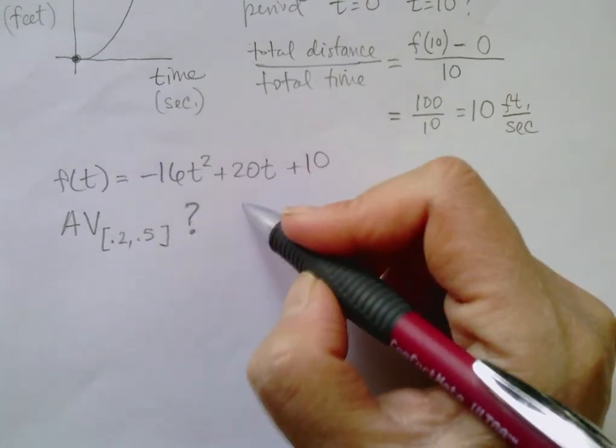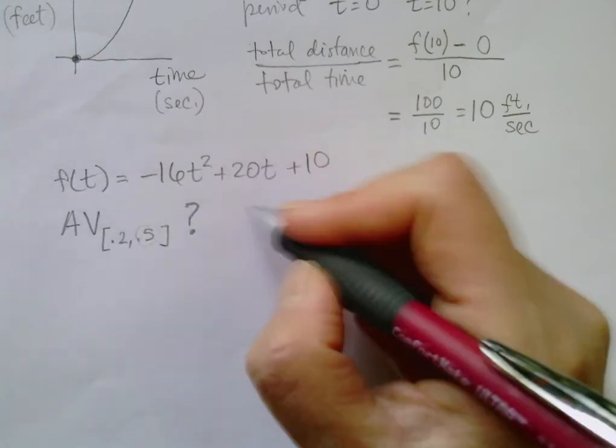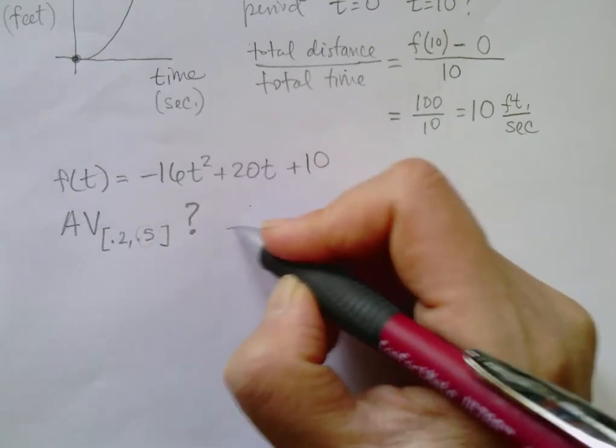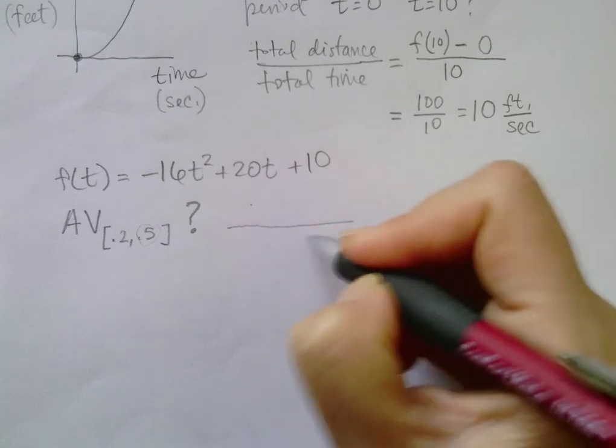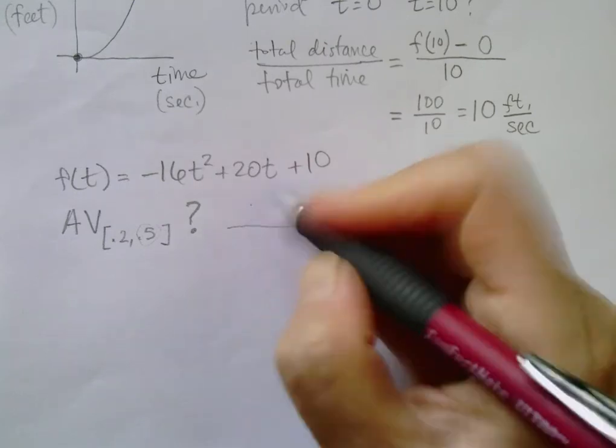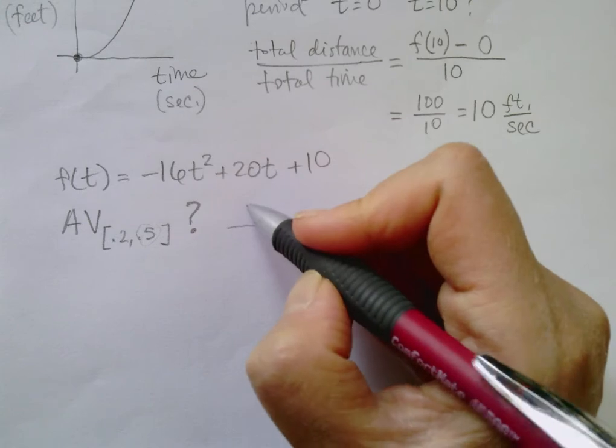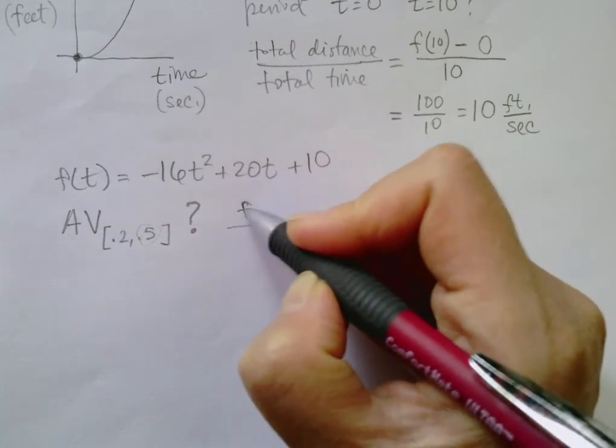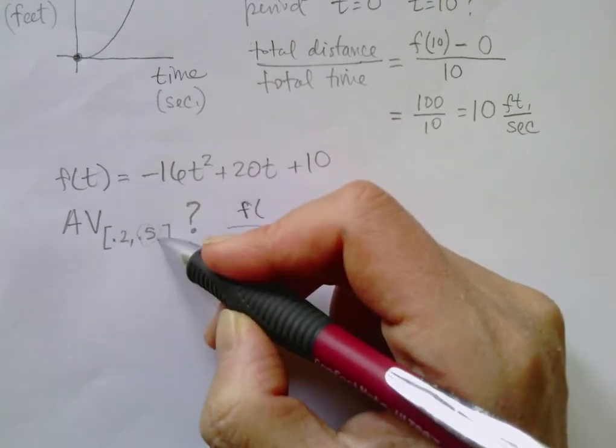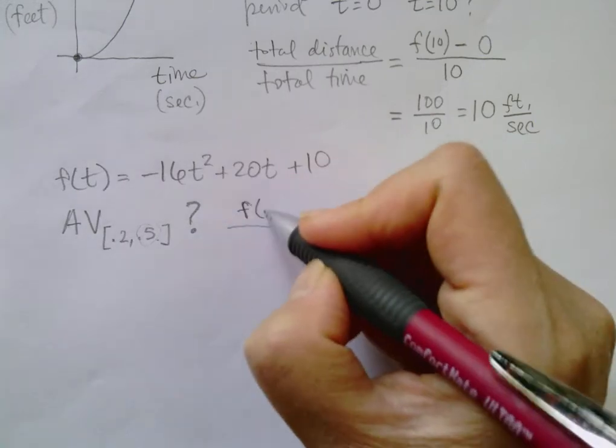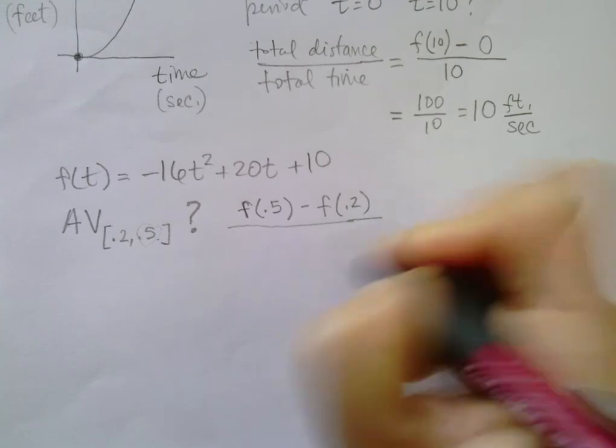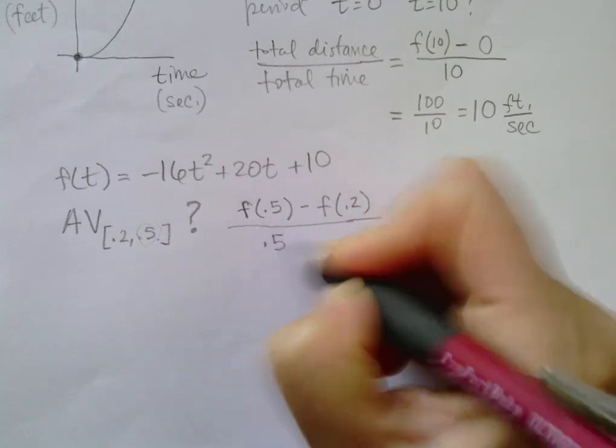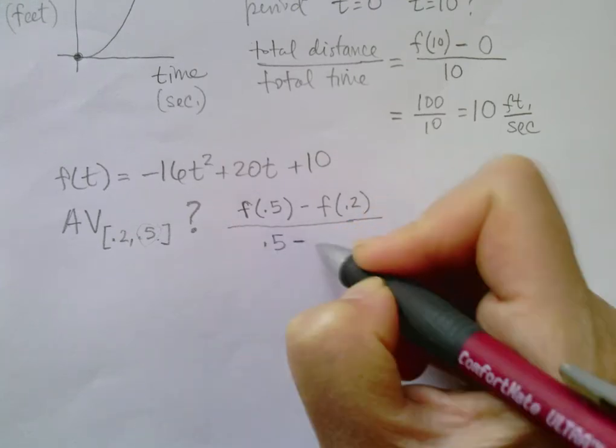Again, you'd have the distance traveled in the numerator over the time elapsed in the denominator. So what is the distance traveled? It's f at the right end point minus f at the left end point over the time elapsed.